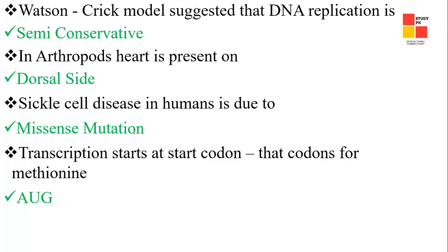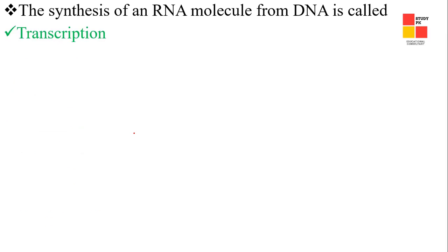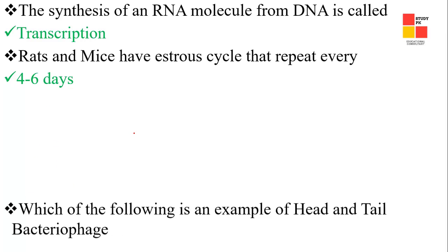Next one: transcription starts at a start codon — the codon for this is AUG. Next one: synthesis of RNA from DNA is called transcription. Next one: rats and mice have a estrous cycle that repeats every four to six days.